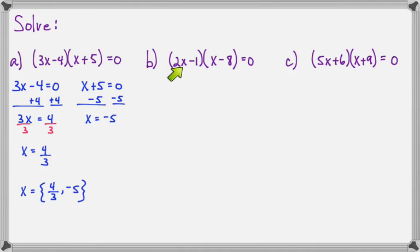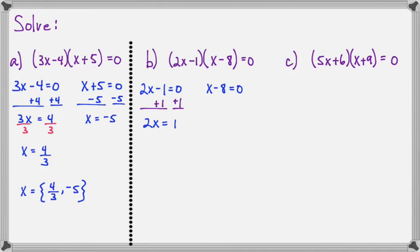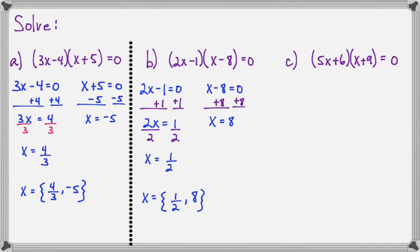For the second equation, we have (2X minus 1) times (X minus 8) equals zero. If 2X minus 1 equals zero, we add 1 to both sides to get 2X equals 1, then divide both sides by 2 to get X equals 1 half. For the other equation, we add 8 to both sides to get X equals 8. So our two solutions are 1 half and 8.